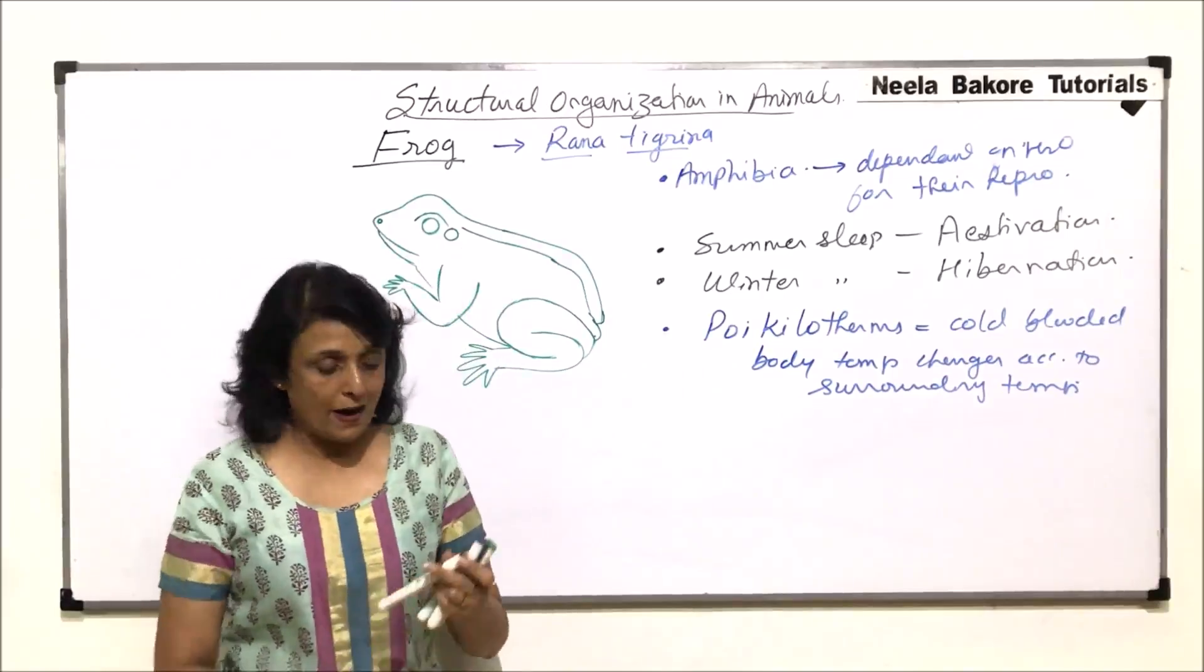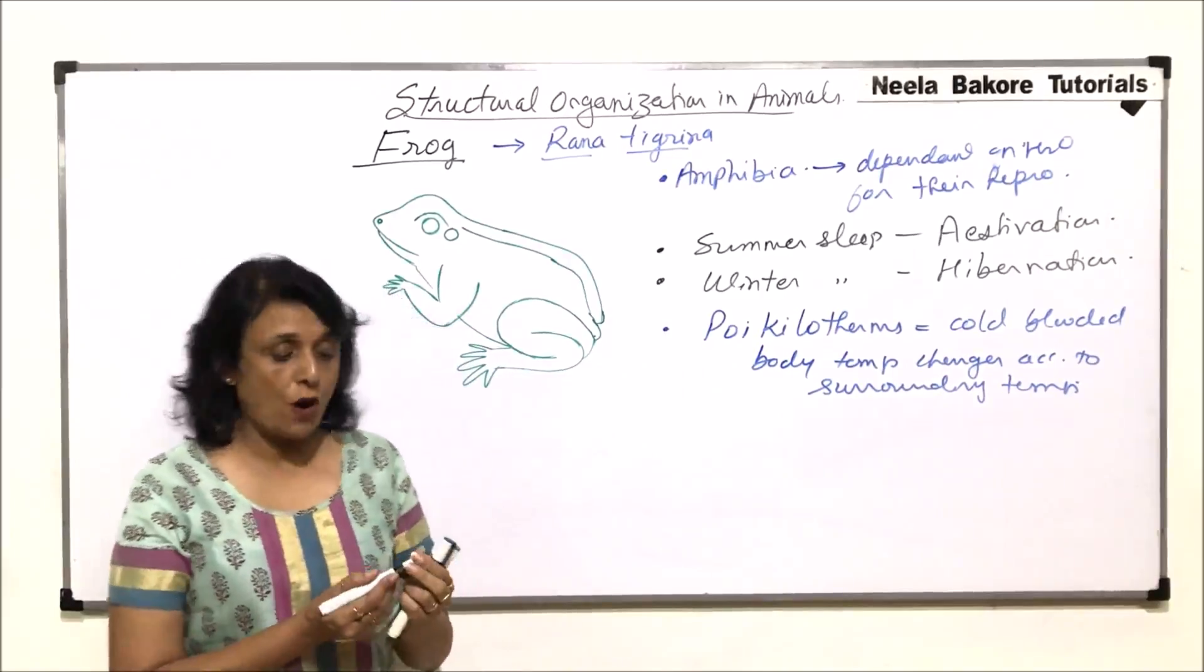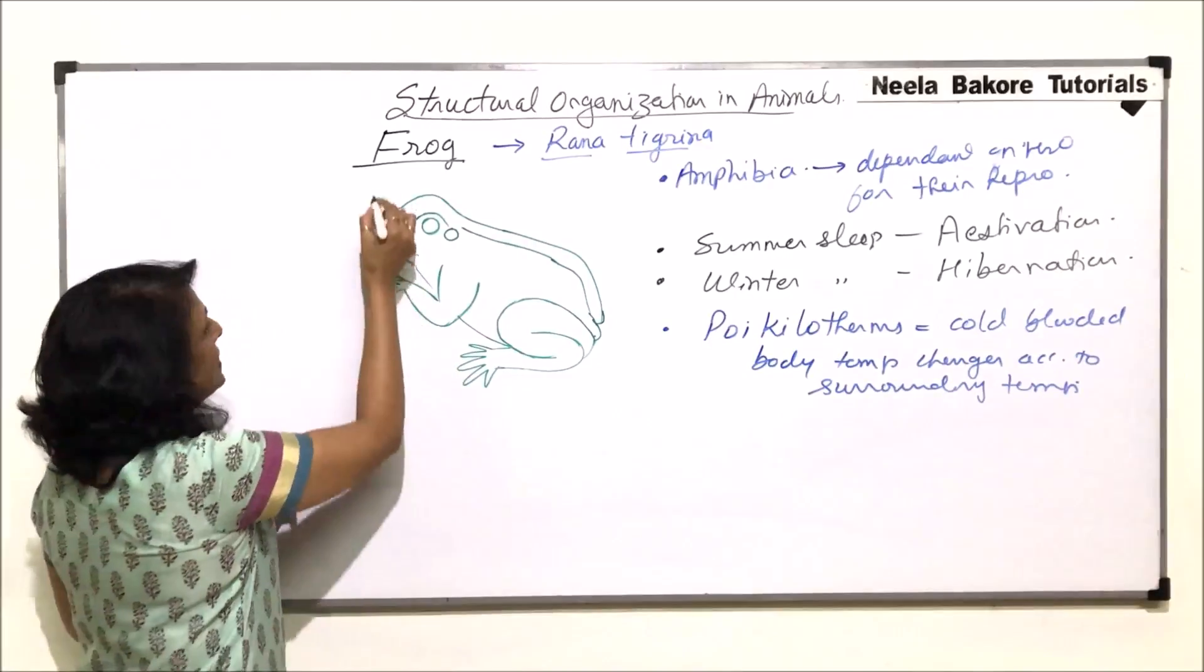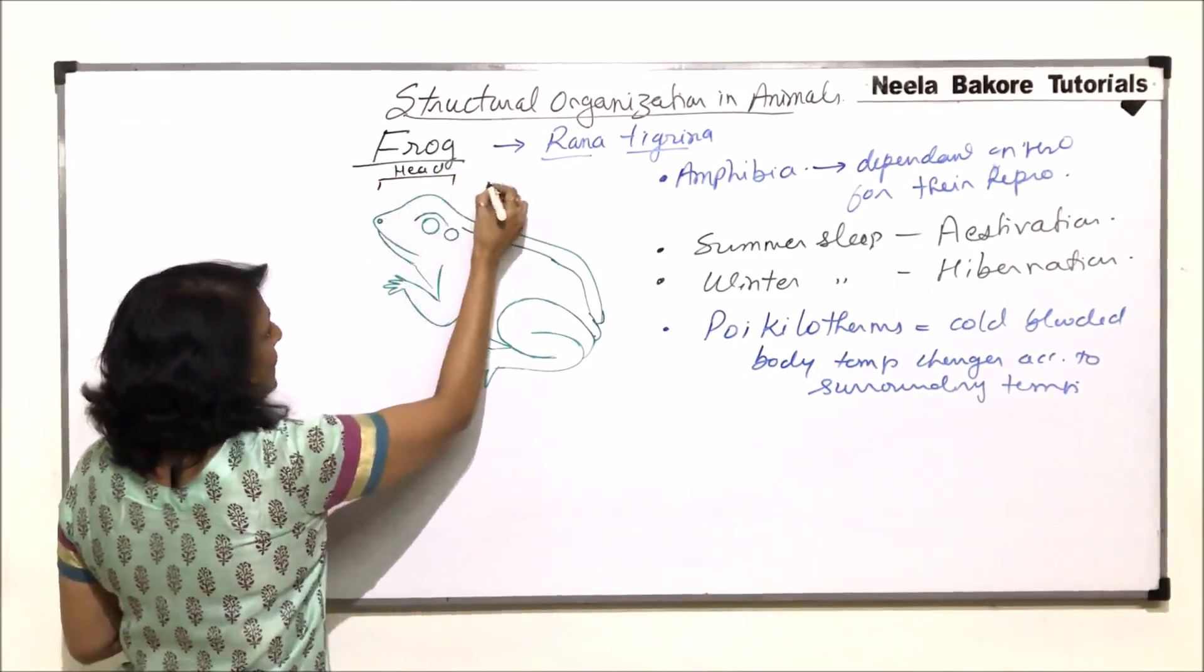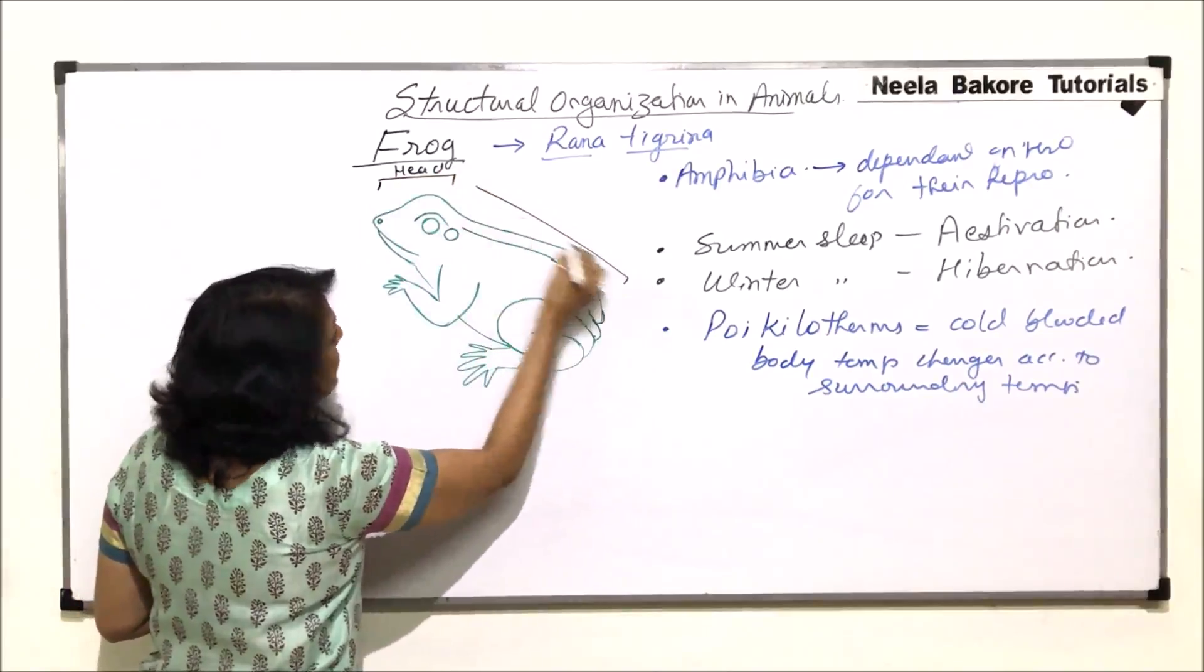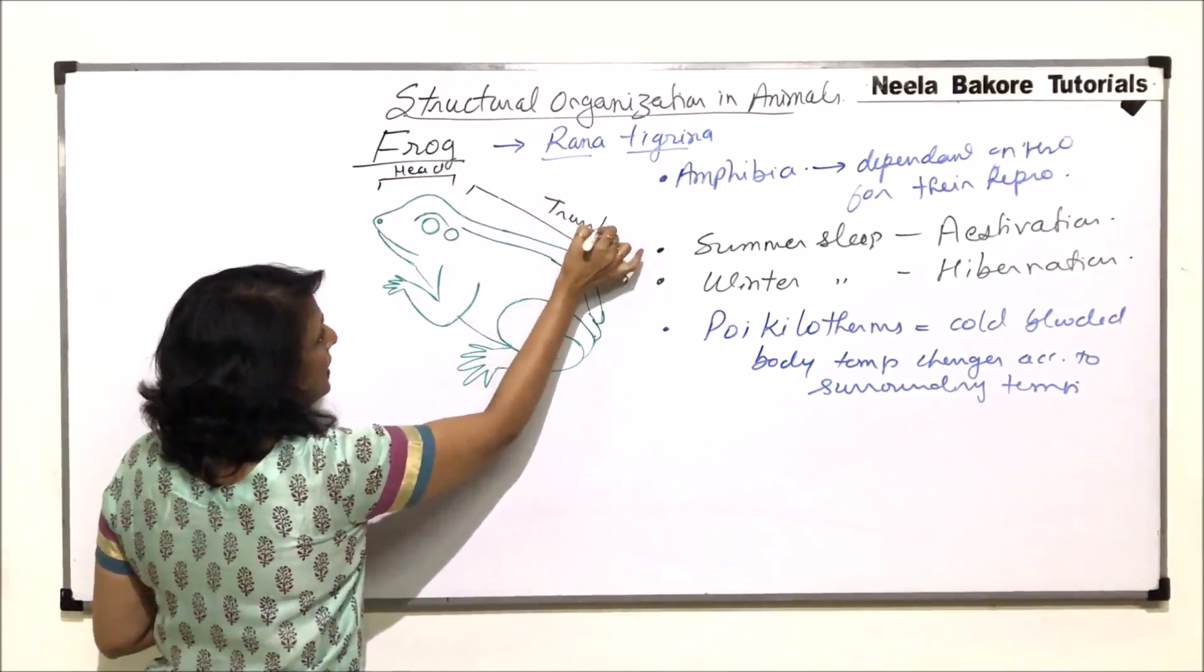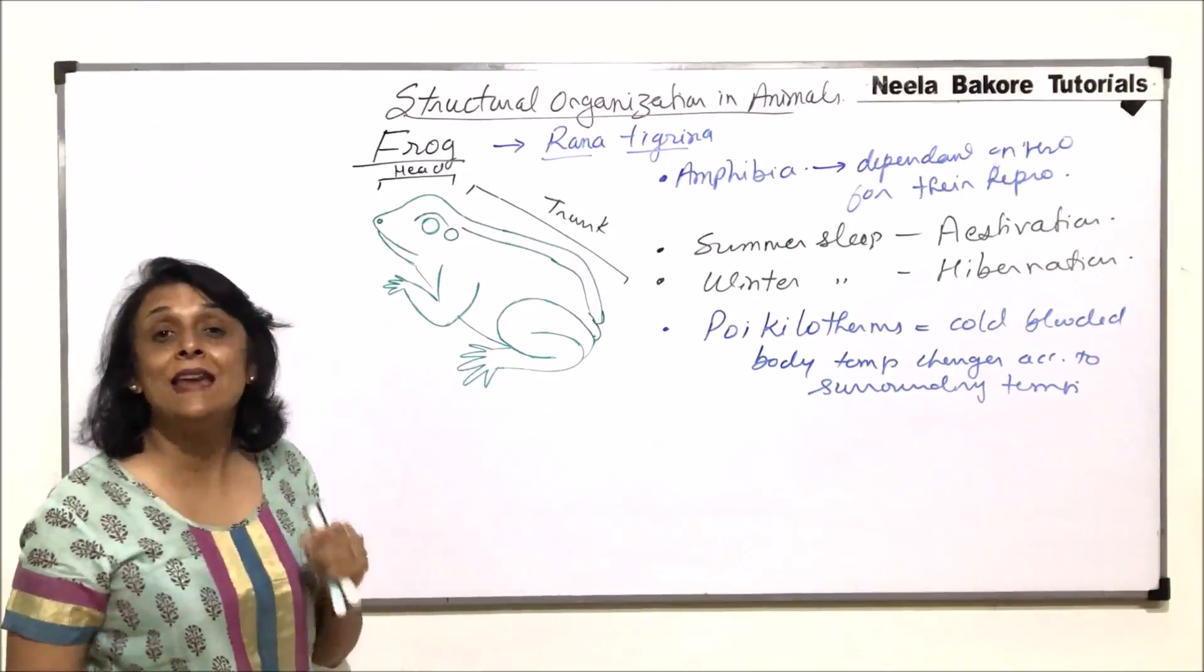Now coming to the structural part. The body of frogs is divided into two parts. This part is known as the head, and the later part, that means the remaining part, is called the trunk.